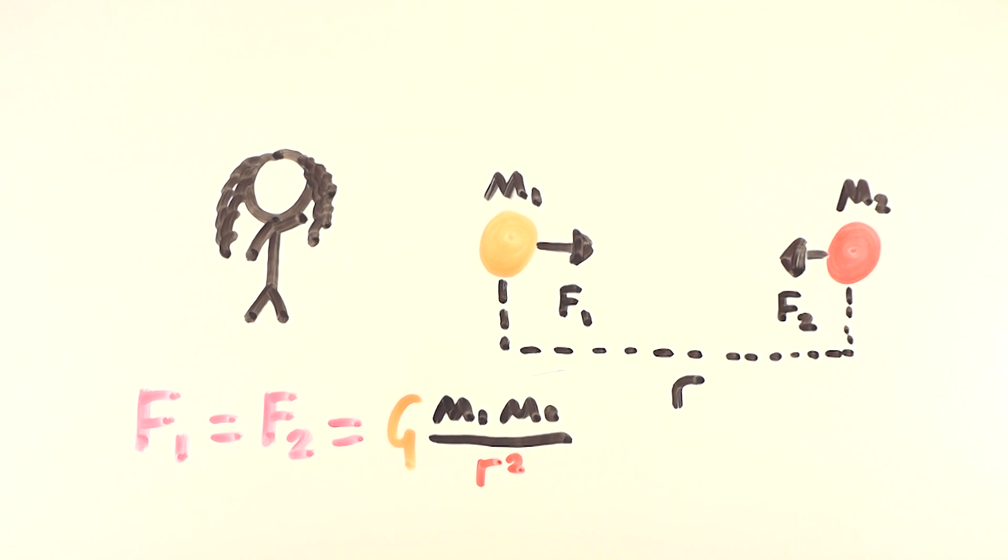Simply put, anything in the universe has some sort of gravitational attraction, no matter how far away they are from each other. Newton had a problem though. He didn't know why gravity worked, but he could calculate the gravitational force between objects.